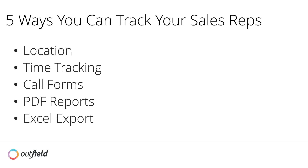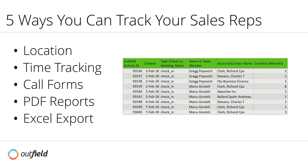The fifth method of rep tracking is through an activity data export. By exporting your team's data to an Excel spreadsheet, you can view a line-by-line record of each touchpoint your team has had over the course of a time period. Utilize Excel's various functions to take a deep dive into how effective your sales team is being with their time.